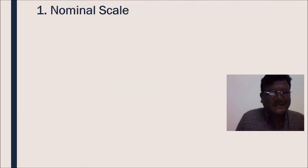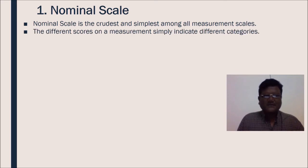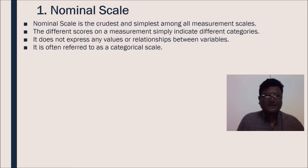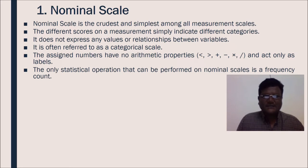Now come to the very first scale of measurement, that is nominal scale. Nominal scale is the crudest and simplest among all measurement scales. The different scores on a measurement simply indicate different categories. It does not express any values or relationship between variables. It is often referred to as a categorical scale. The assigned numbers have no arithmetic properties like less than or greater than, plus, minus, multiplication or division and act only as labels.